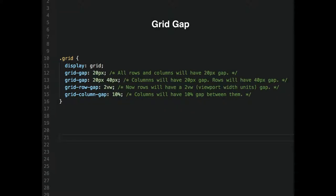Grid Gap is, believe it or not, the gap between grid cells. You just set grid-gap: 20px instead of setting margins or paddings to space items. Two values — say 20px and 40px — sets the column gap and the row gap respectively. Margins are inside of that and they will definitely not collapse into the gap.